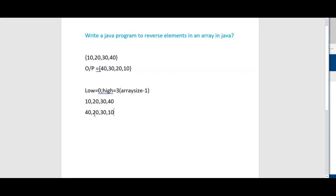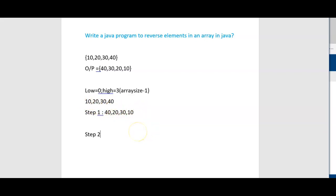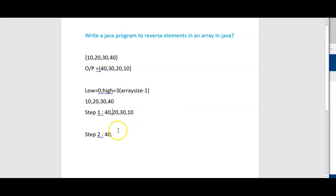After step 1, the array will look like 40, 20, 30, 10. And now at step 2, what we will do is swap the second element and second last element, giving us 40, 30, 20, 10.